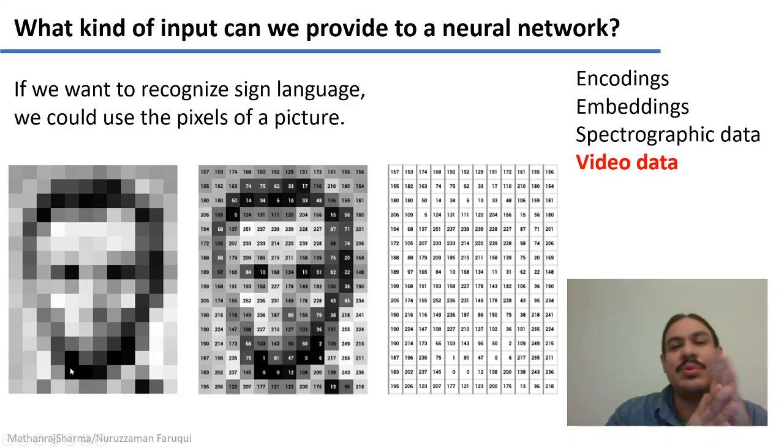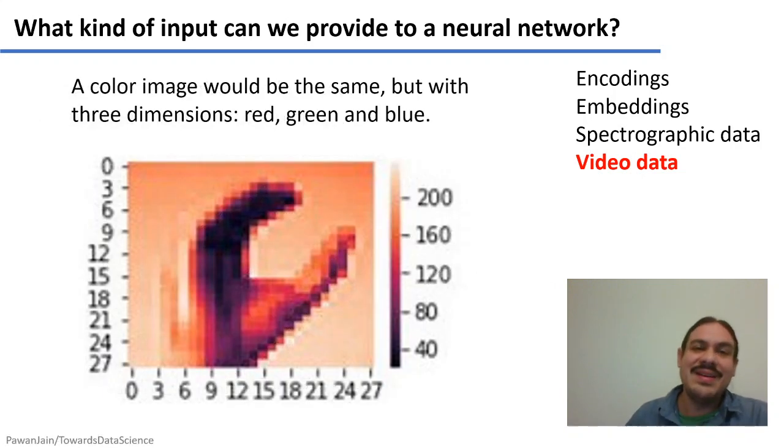And if you have a color picture, for example, it would just be three matrices, one for the red, one for the RGB, one for the green, one for the blue. Yes, a color image would be the same, but with three different matrices.